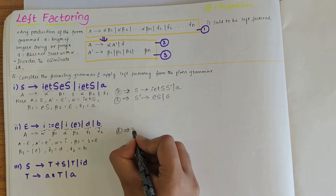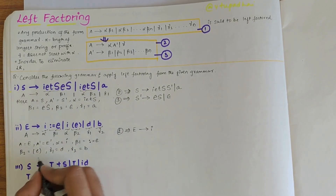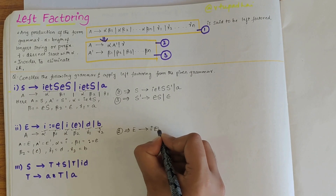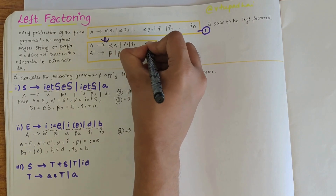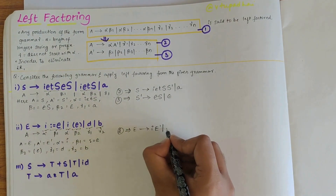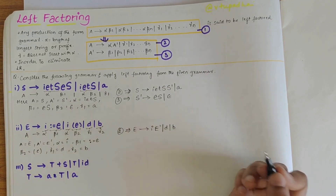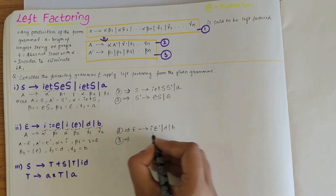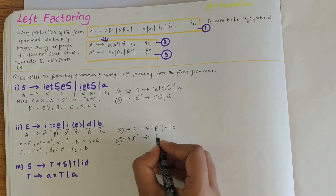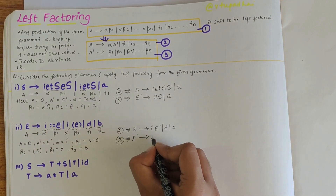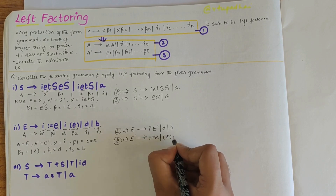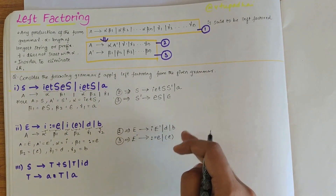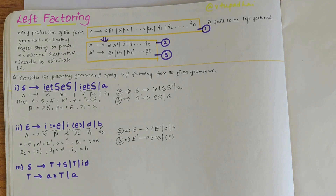Writing the second equation: E derives i E' | d | b. Then the third equation is: E' derives := E | (E). These two productions are the grammars after eliminating the left factoring for the second grammar.